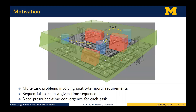This figure depicts the motivation for this work. The scenario shows a quadrotor which is supposed to visit a given sequence of areas while being confined to a given area. The main requirement is that each task is supposed to be completed within a given time sequence — so what we need is prescribed time convergence for the system trajectories to a given set.